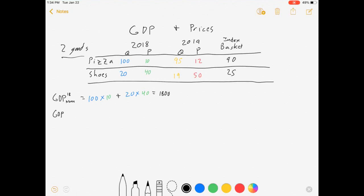We want to calculate GDP nominal in 2019. We're still going to multiply quantities times prices in the same year. So in 2019 we sold 95 pizzas at $12 each plus 19 shoes at $50 each, and so that is $2,090 of production in 2019.